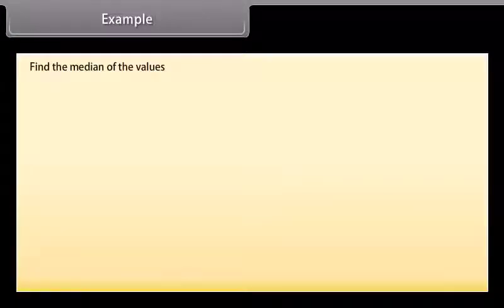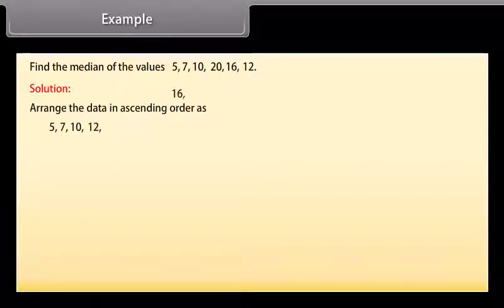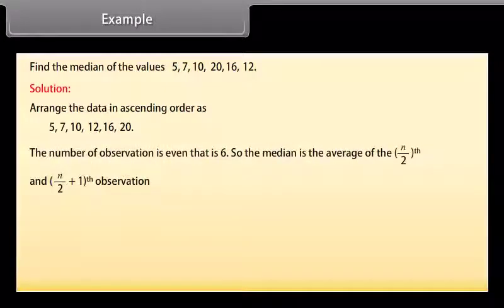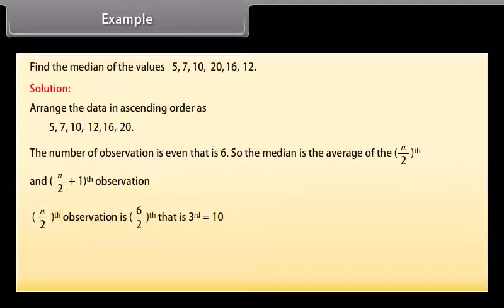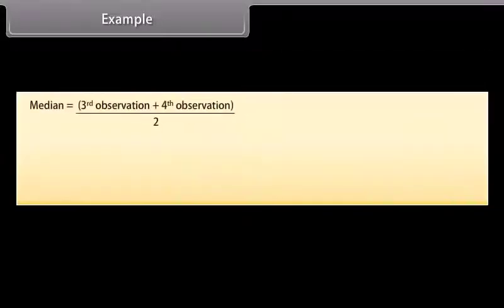Example: Find the median of the values 5, 7, 10, 20, 16, 12. Solution: Arrange in ascending order: 5, 7, 10, 12, 16, 20. The number of observations is even, that is 6. The median is the average of the (n/2)th and (n/2+1)th observations. The 3rd observation equals 10 and the 4th observation equals 12. Median equals (10+12) divided by 2 equals 11.